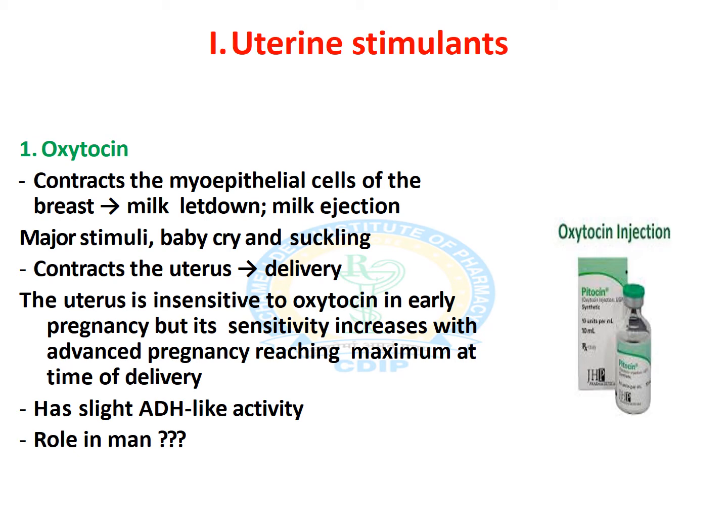However, oxytocin mainly contracts the uterus during delivery time, and it is insensitive in early pregnancy — it doesn't show any contractility behavior in early pregnancy cases. But its sensitivity increases as pregnancy advances near the delivery stage, when contractility behavior of oxytocin gets maximum at the time of delivery. It has slight antidiuretic hormone-like activity, and the role of oxytocin in men is still unexplained.